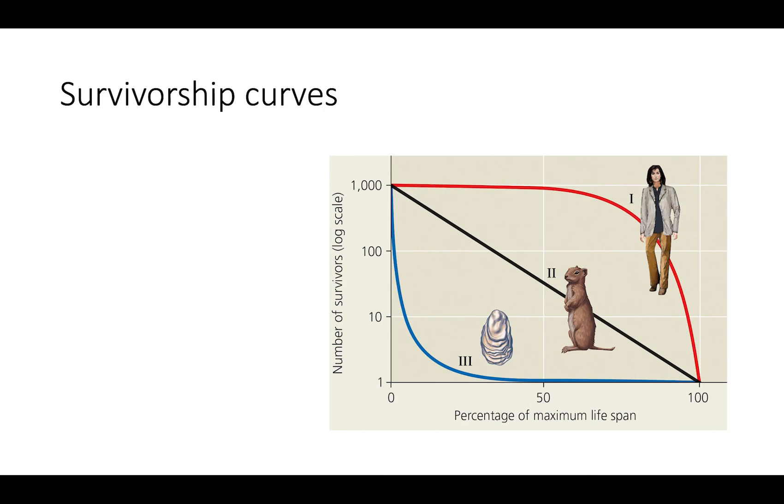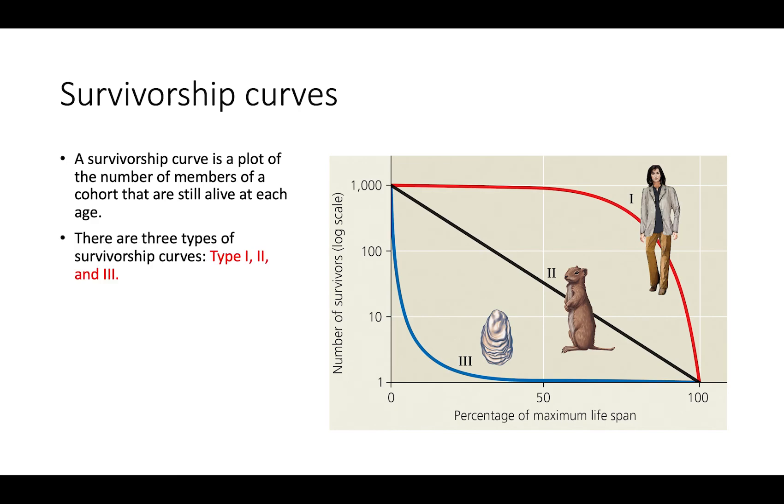Another thing we look at when examining populations are survivorship curves. A survivorship curve is a plot of the number of members of a cohort that are still alive at each age. There are three types of survivorship curves: Type I, Type II, and Type III.